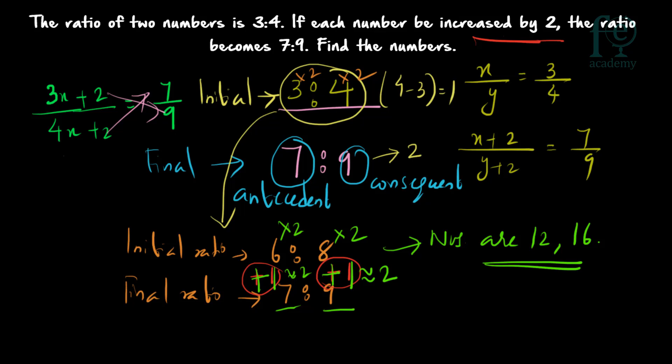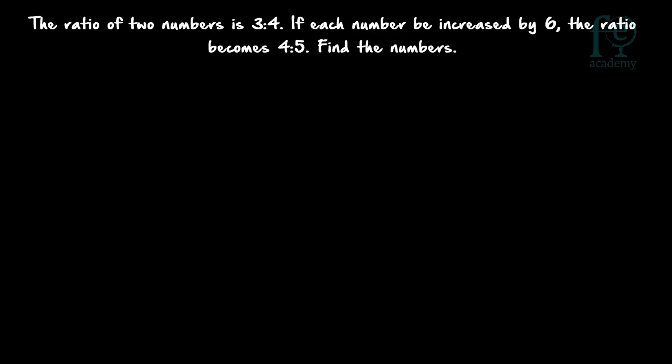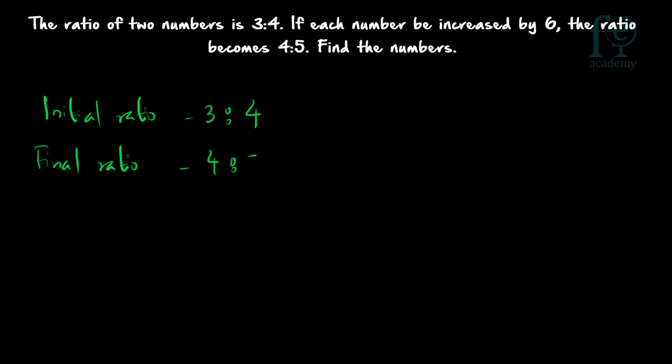Example number 2: the ratio of 2 numbers is 3 is to 4. If each number be increased by 6, the ratio becomes 4 is to 5. Find the numbers. The initial ratio is 3 is to 4 and the final ratio is 4 is to 5. When you add 6 to each number you get the final ratio from the initial ratio.